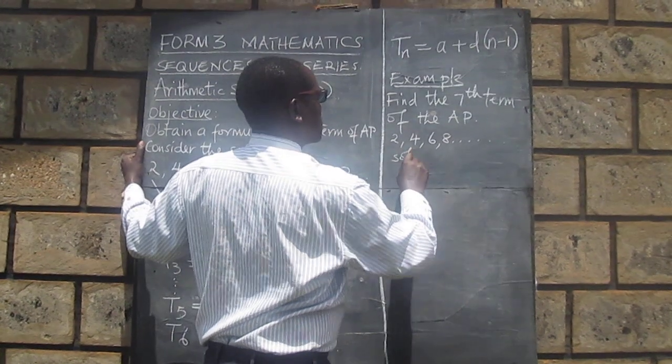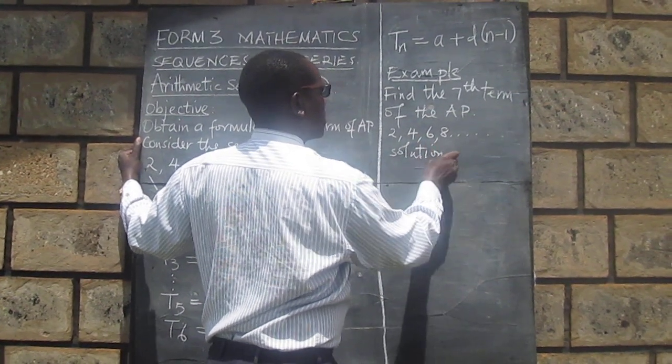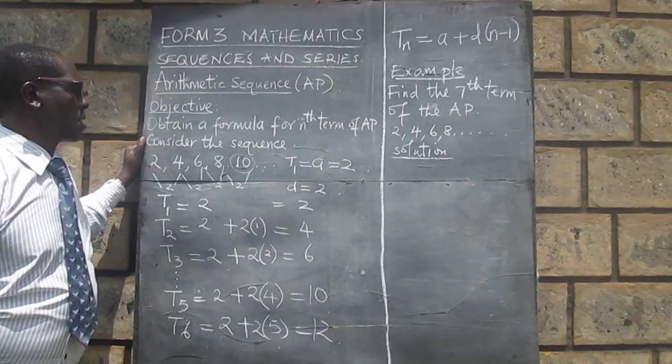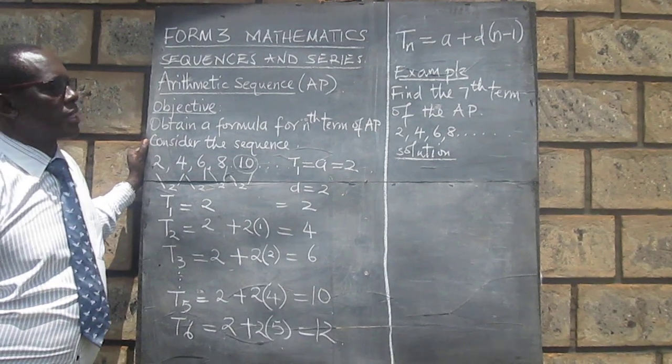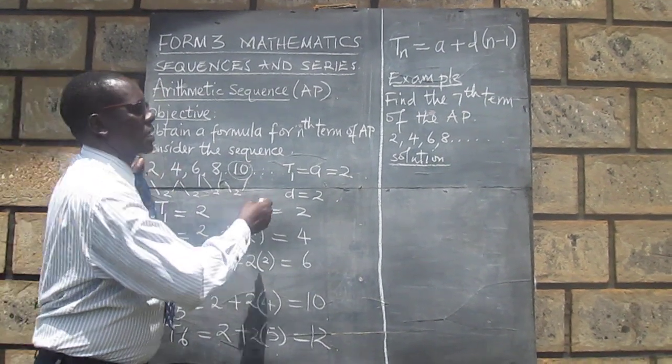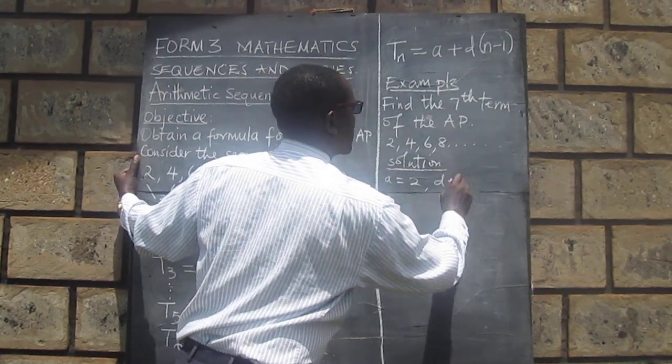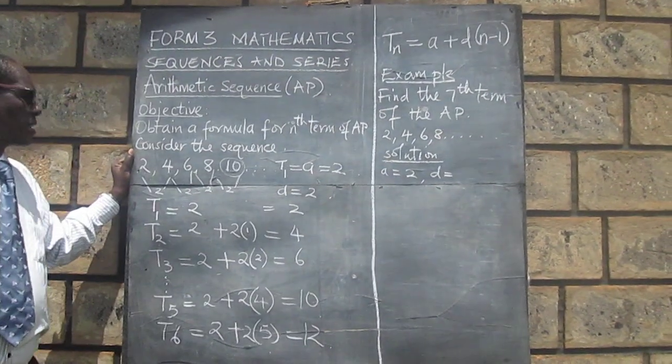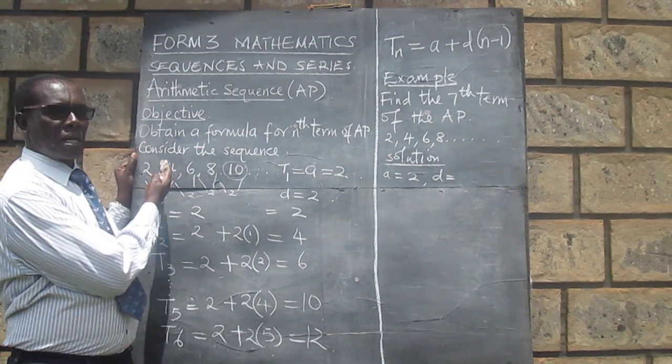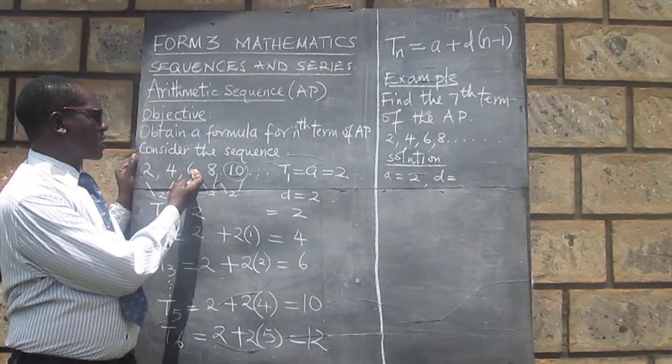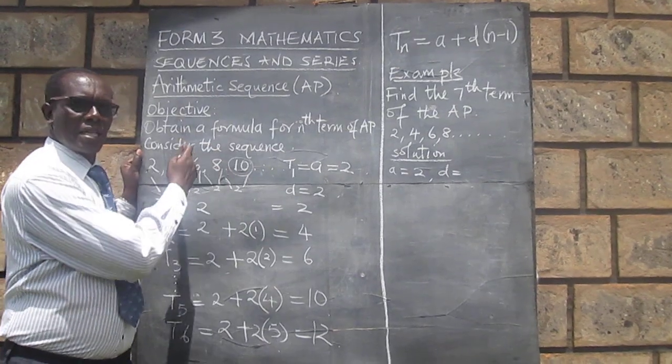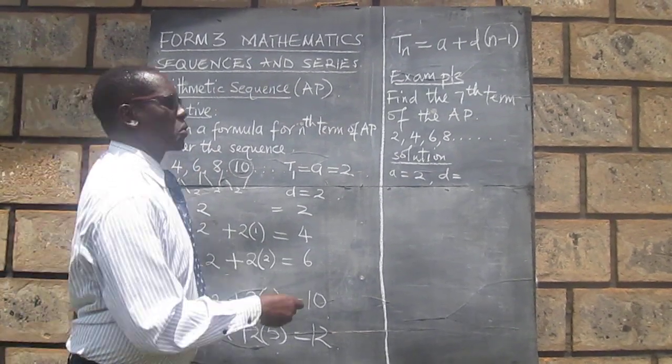You can say here A is 2, a common difference. How do we get the common difference? We take the second term minus the first term, or the third term minus the second, or the fourth term minus the third, like that. So let's just take the third minus the second, and that gives us 6 minus 4, which is 2.